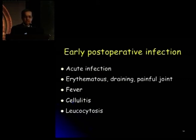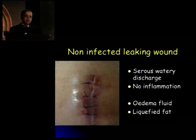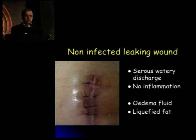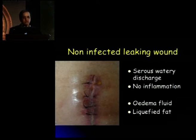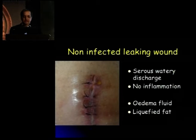A word of caution: not every leaking wound is an infected knee. Many times, immune-compromised patients or rheumatoids with low albumin and nutritional deficiency can have serious ooze — a clear yellow fluid that oozes from these wounds — and most of these patients tend to settle down with rest alone, without being aggressive with mobilization. This is a serious watery discharge without significant inflammation or pain — usually edema fluid or liquefied fat oozing from the wound. All these patients need is some extra time and delayed mobilization.